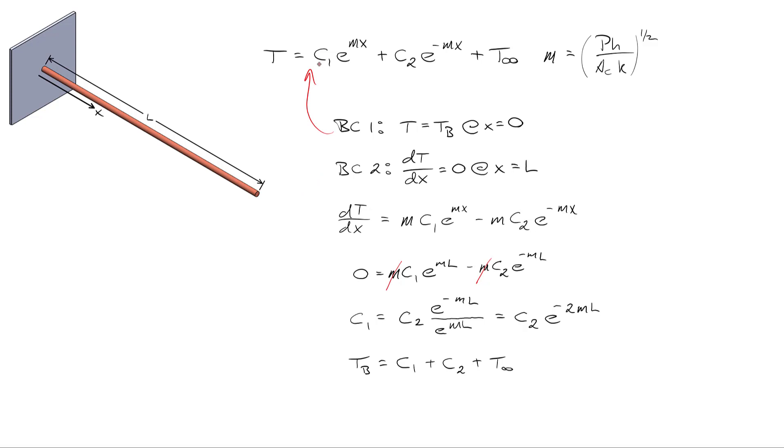Now let's apply our first boundary condition to the temperature profile, in which T is equal to Tb at a value of x equals zero, and when x equals zero both of the exponential terms go to 1 and we're left with, in this case, our expression T becomes Tb is equal to C1 plus C2 plus the ambient temperature T infinity. So now we're going to plug our expression for C1 into this equation, and then we're going to rearrange and solve for C2, which is a temperature difference divided by 1 plus e to the negative 2mL.